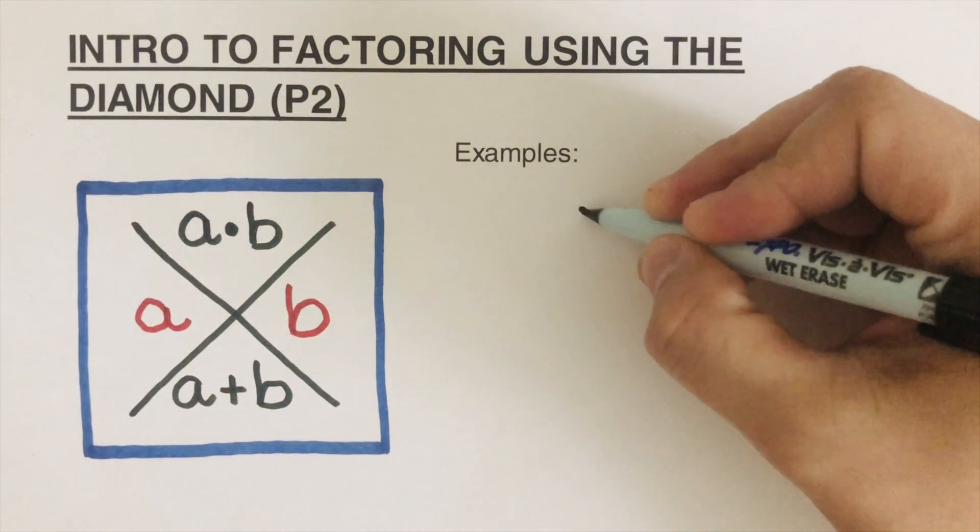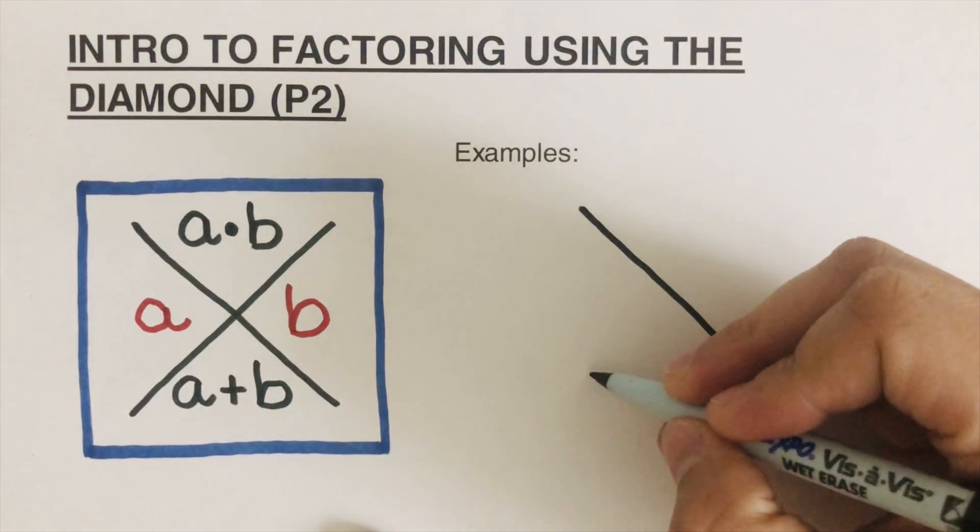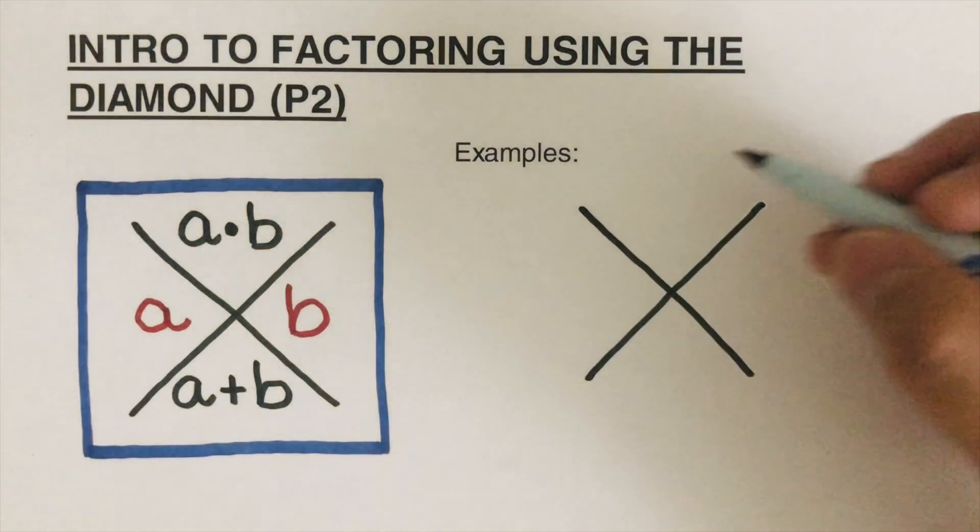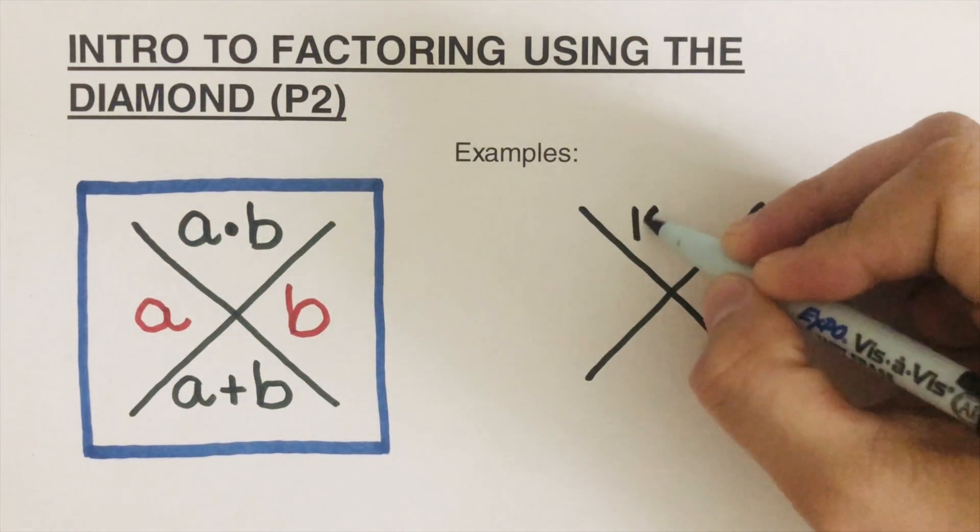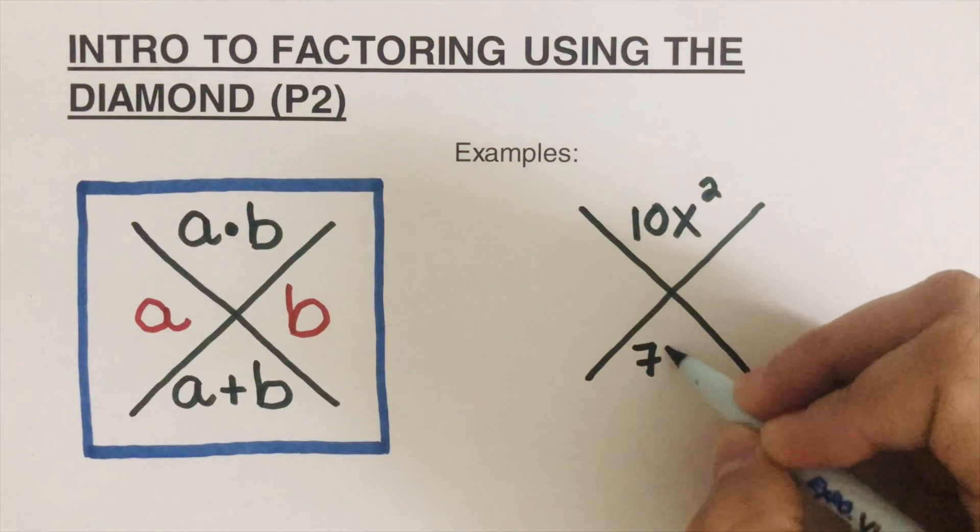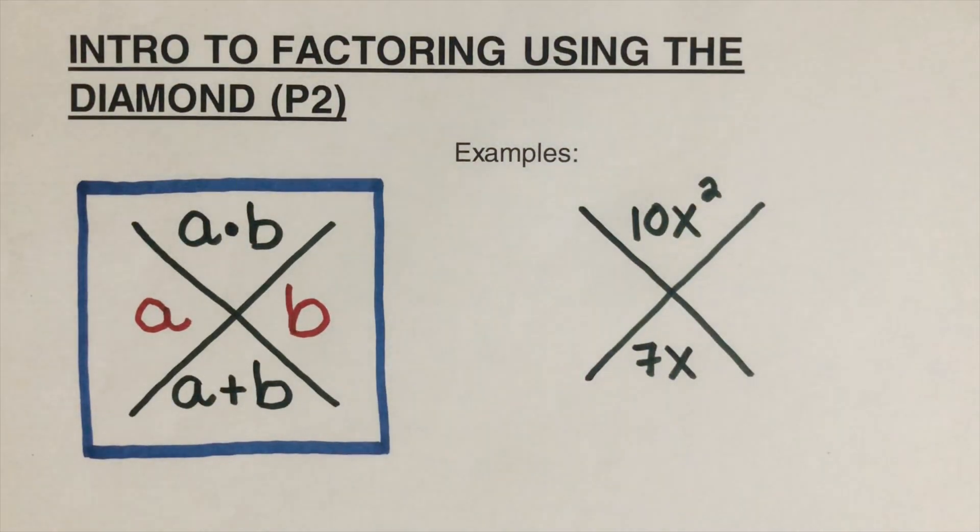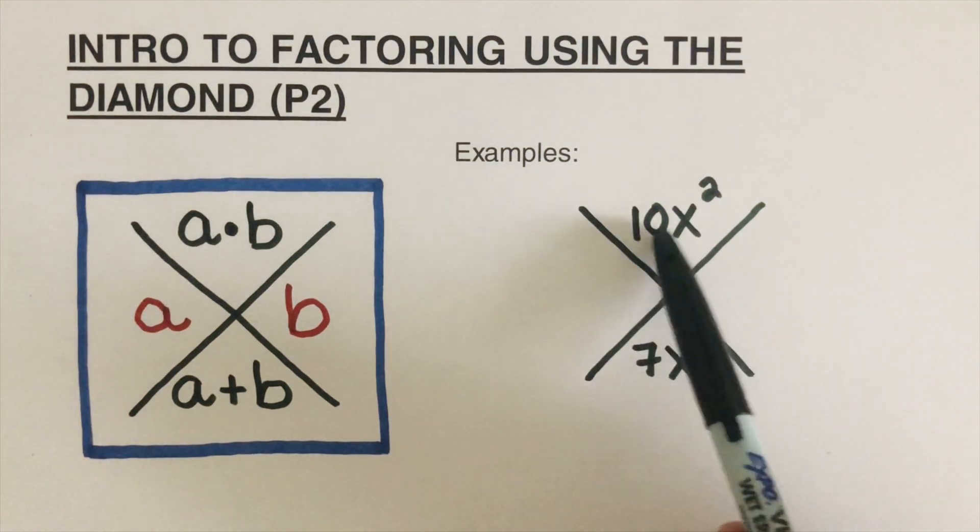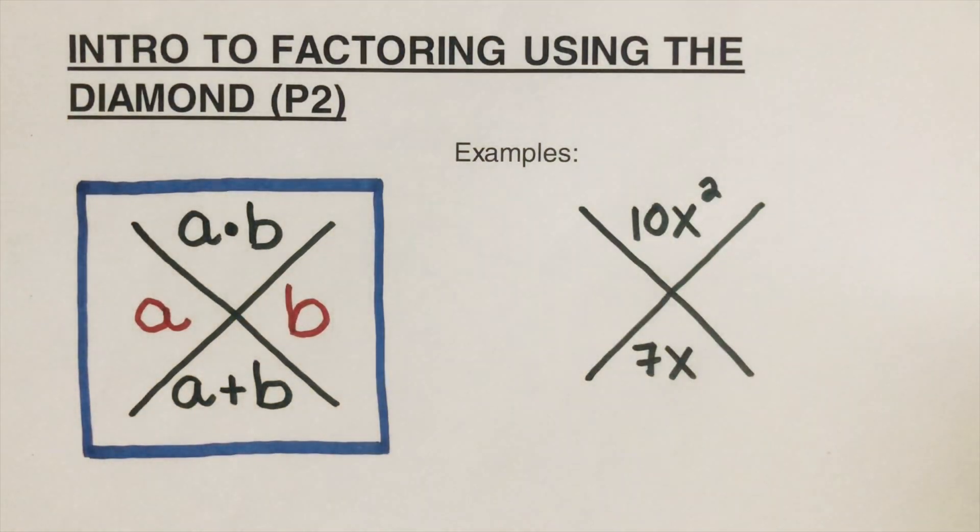Notice in the first part, we only had all integers. Now this time around, we're going to have variables on it. So let's say for example, this one right here is 10x squared and this is 7x. So we are going to determine what are the factors that we write over here such that when we multiply, it's 10x squared and when we add, it's 7x.